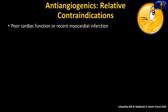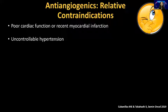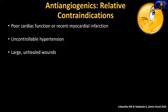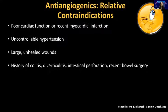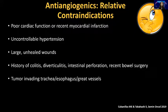However, there are relative contraindications for anti-angiogenics, so we can't use them in all patients — patients with poor cardiac function or recent myocardial infarctions, uncontrolled hypertension because the drugs cause hypertension, large unhealed wounds that will not heal on these drugs. History of colitis, diverticulitis, intestinal perforation, recent bowel surgery. We have seen patients bleed from being on these drugs, especially if they have a history of these, so we need to be careful. Tumors invading the trachea, esophagus, and great vessels make patients more prone to bleed.